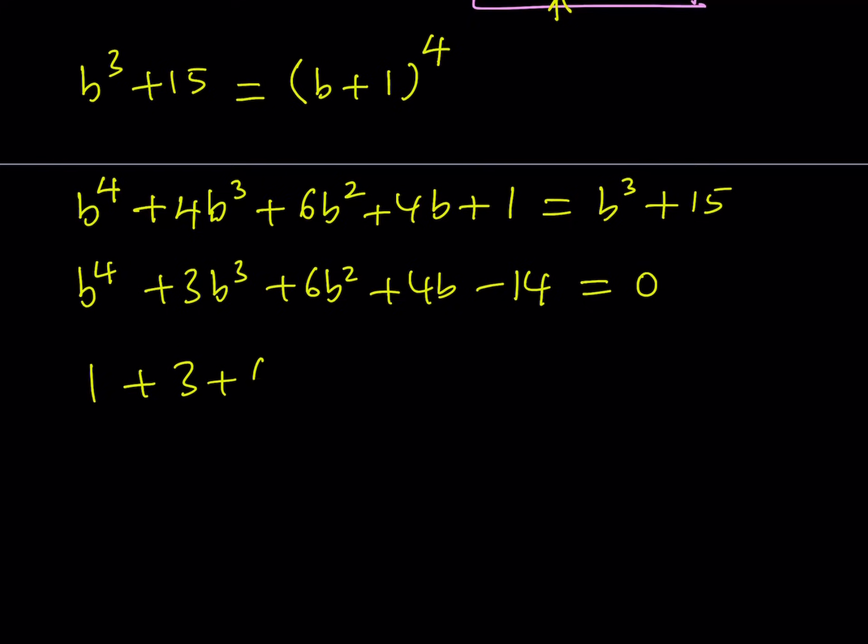1 plus 3 plus 6 plus 4. Oh, come on. We know that it's going to work, right? Otherwise, why would I mention it? Anyway, so you get the idea here. 4 plus 6 plus 4. Okay, that's 14 minus 14, which is equal to 0. What is that supposed to mean? Well, this means that B equals 1 is a solution.